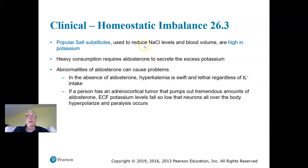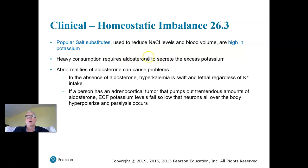Salt substitutes — ionic compounds that trigger taste sensors and taste buds so we enjoy our food — are often used by people with hypertension who shouldn't be taking in high sodium chloride. However, those salt substitutes are high in potassium, which creates an additional stress on the body. We need plenty of aldosterone to excrete that potassium from the circulation coming in from dietary intake. If you don't have enough aldosterone and eat a lot of these salt substitutes, that could be a serious problem.